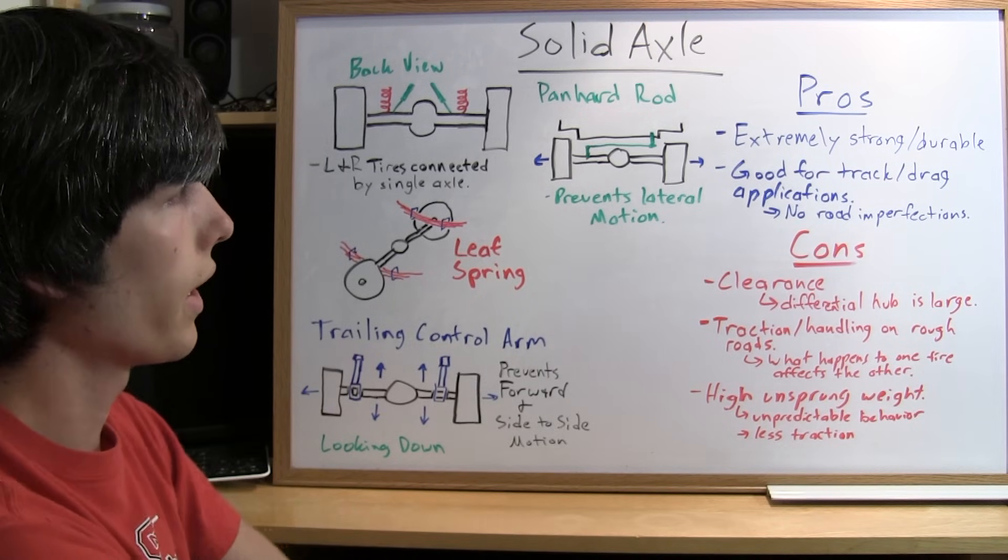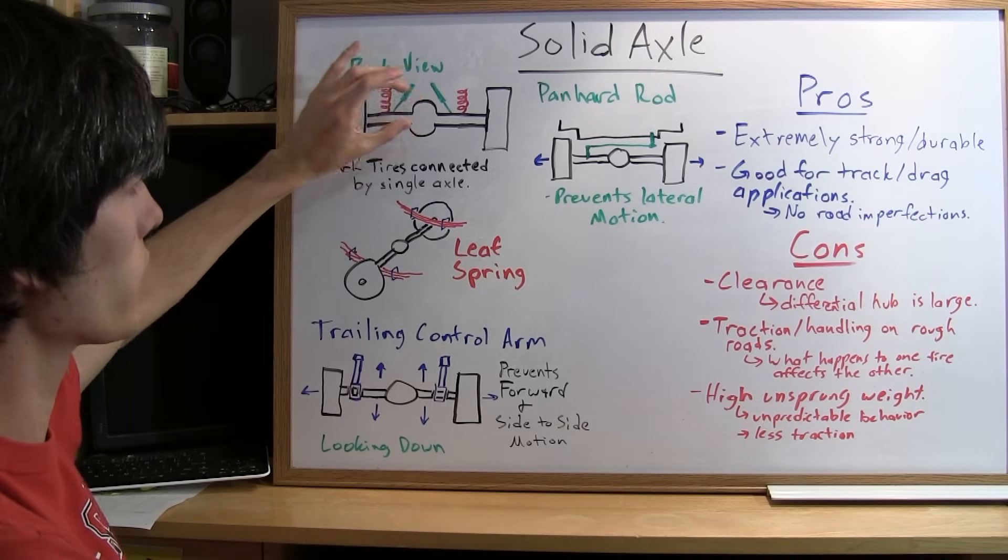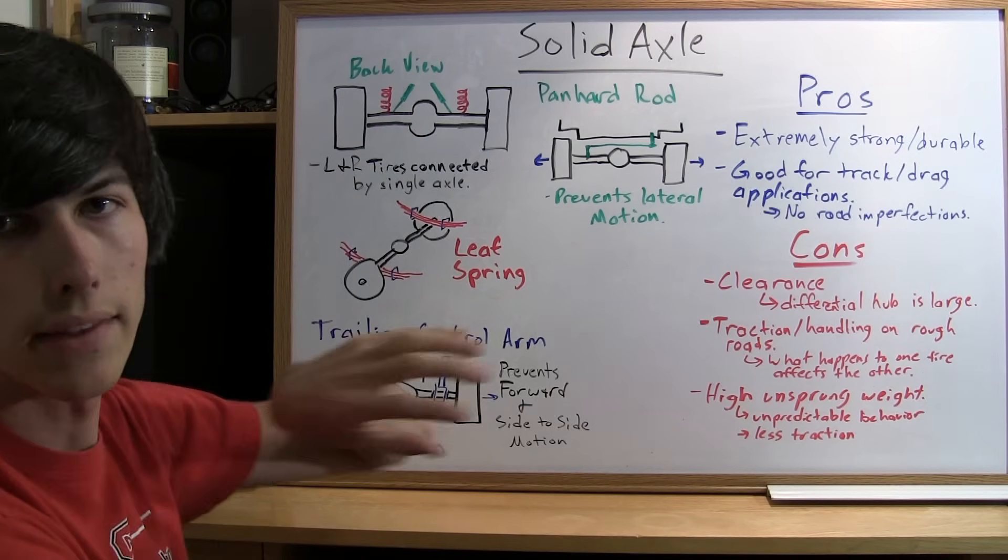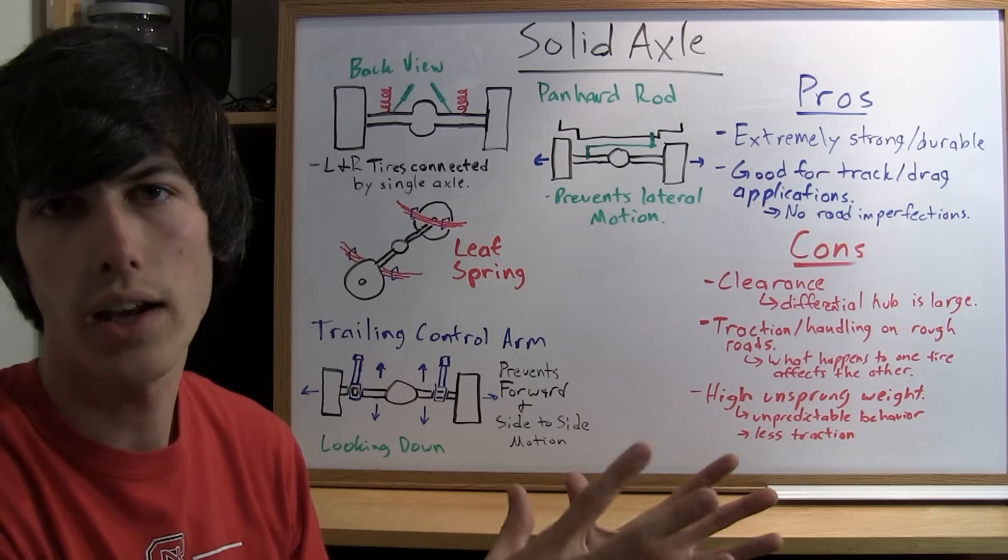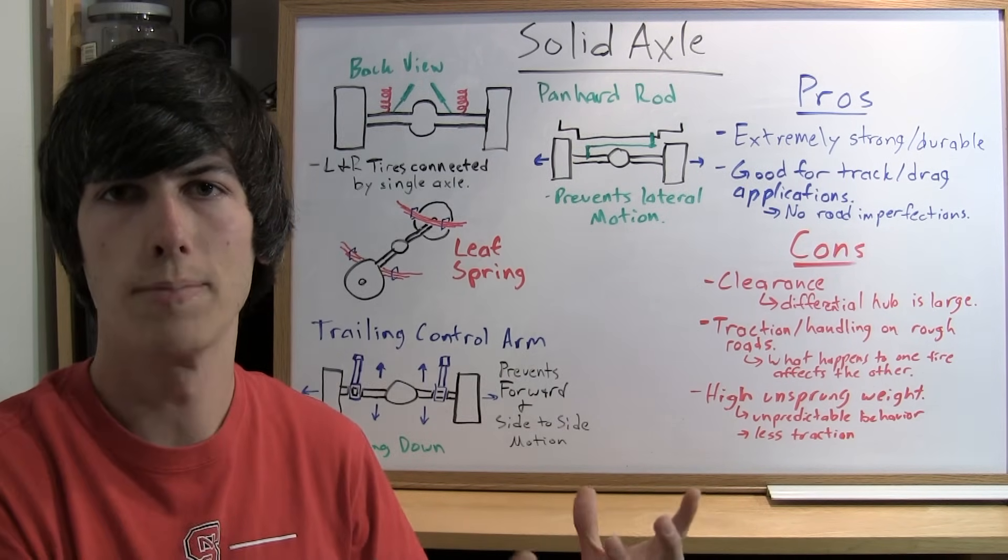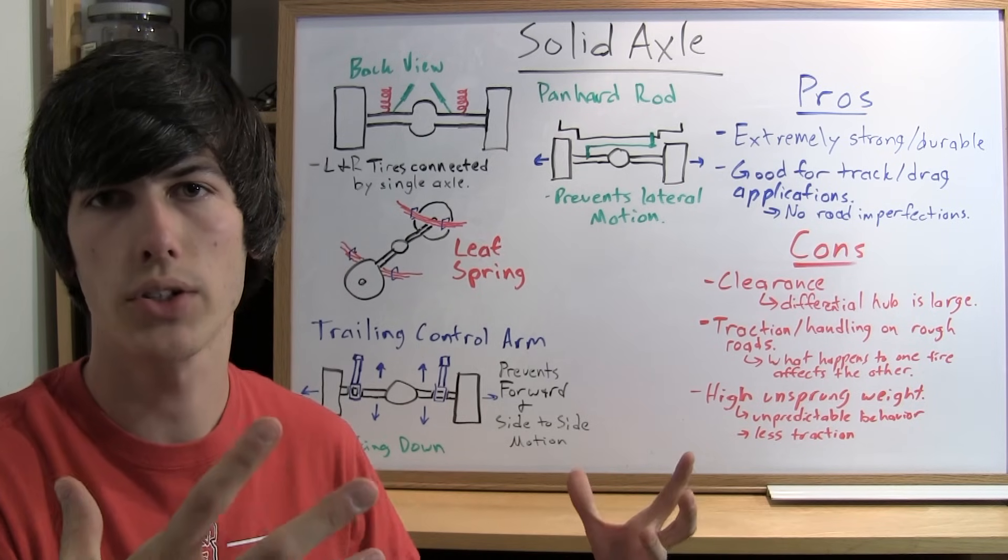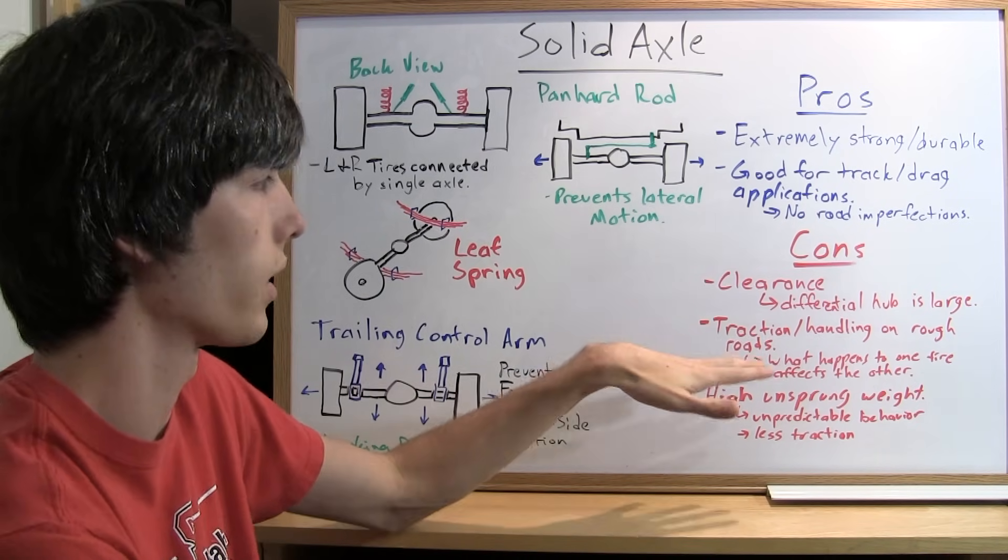Some of the downsides: clearance is one. You've got this giant differential hub sitting in the middle, and that gives you a clearance issue. Now, one of the things is that a lot of these vehicles that use solid axles will be trucks and they'll have large tires, so that clearance really won't be an issue, but it could be, so I've listed it as a negative.